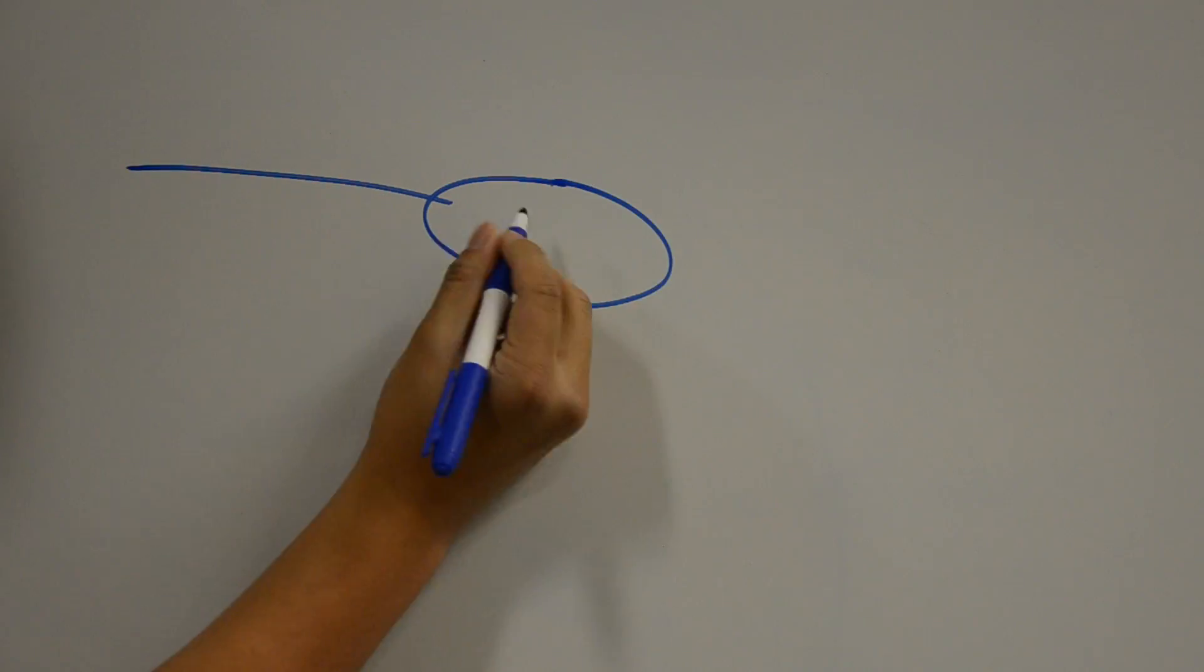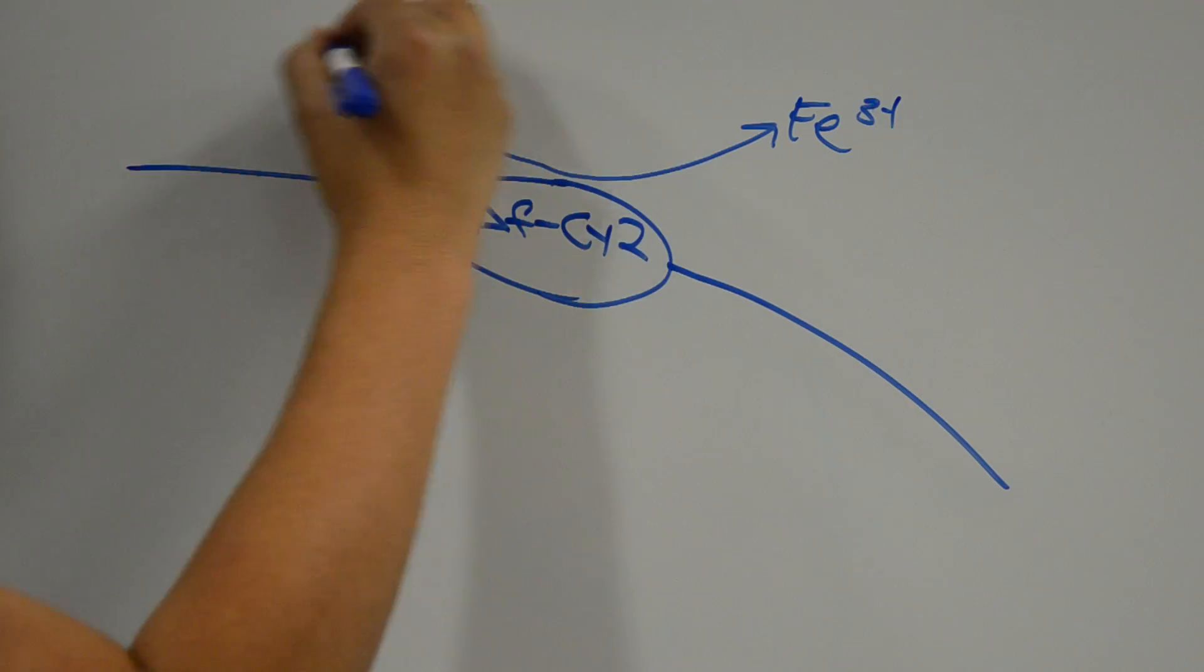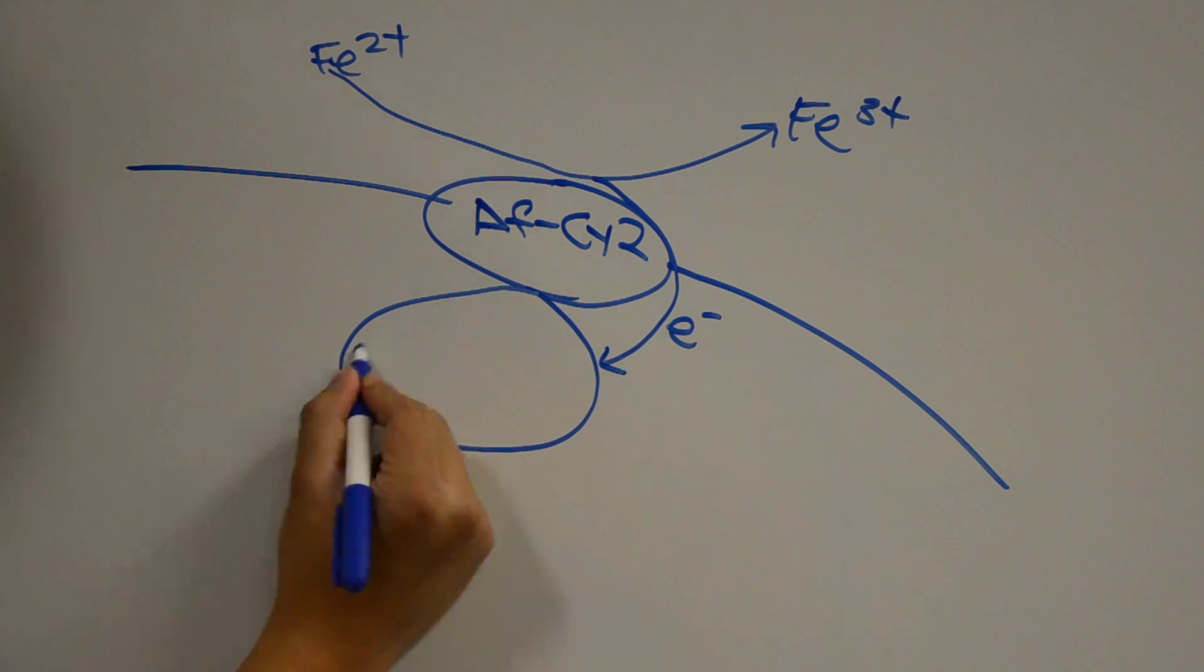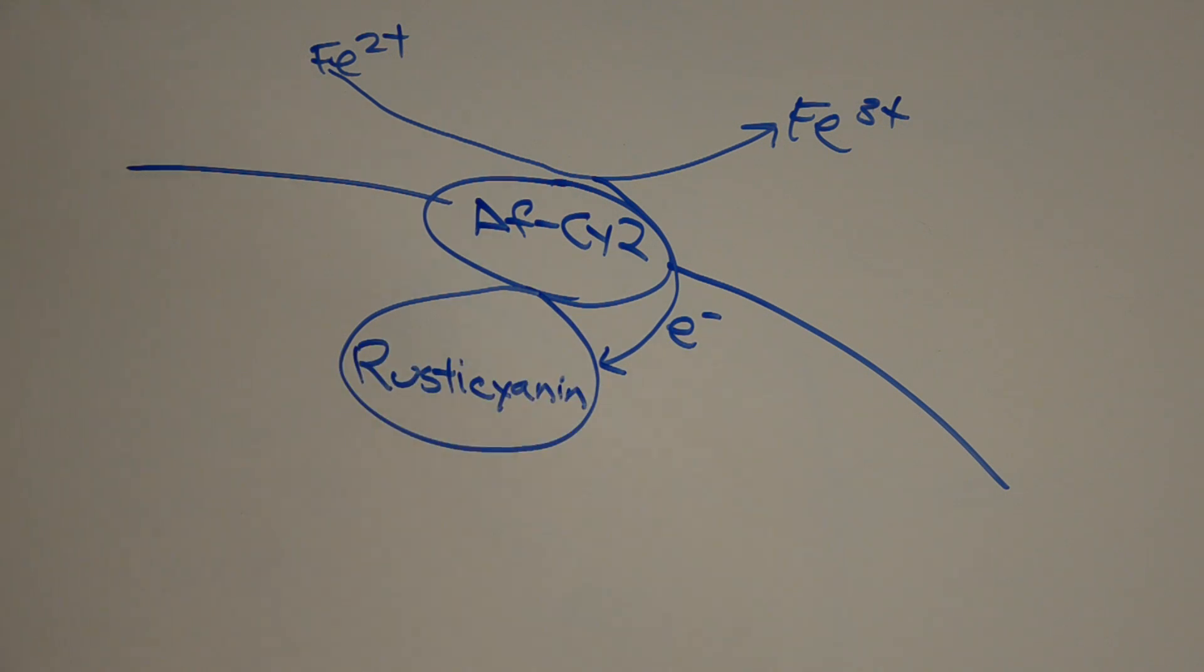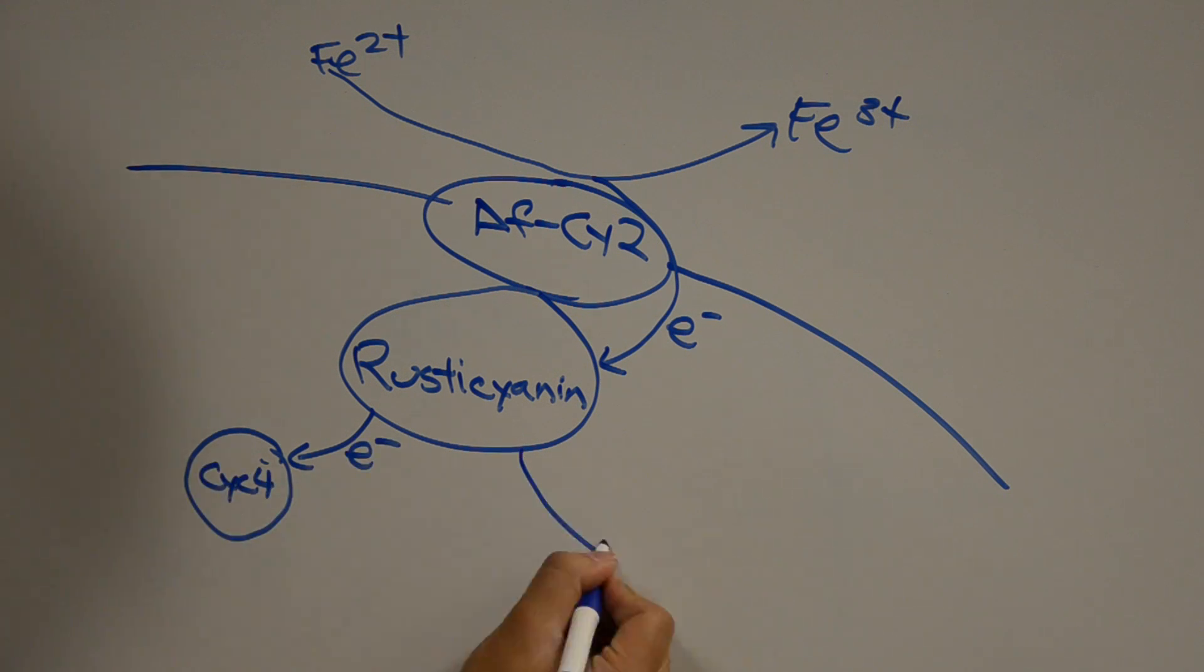Looking closer at the mechanism, we can see that the highly oxidizing rusticyanin cytochrome 2 protein that is embedded in the outer membrane strips iron 2 plus of an electron, which it passes to the rusticyanin complex in the periplasm. Rusticyanin then passes the electron to either the downhill pathway on the left or the uphill pathway on the right.